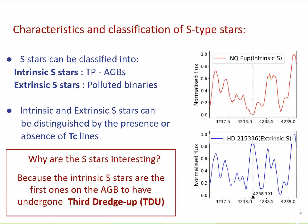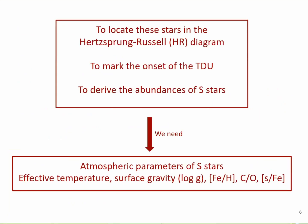In particular, the intrinsic S-stars can really help us understand the third dredge-up physics, because they are the first ones on the AGB stage to show signatures of technetium, zirconium, and so on — which are signatures of the third dredge-up. So if you want to understand the third dredge-up physics, its occurrence, and its dependence on mass and metallicity, we can really use these S-stars to do that.